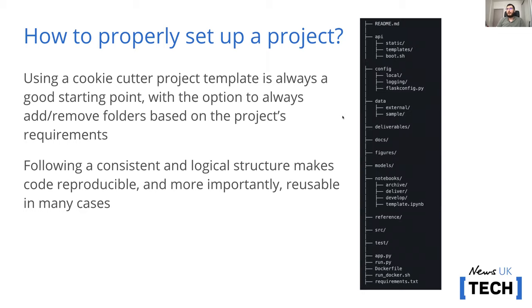On how to set up a project: I always use a cookie-cutter project template. Most data projects follow a structure very similar to this example. The idea is that if you follow a similar structure, it makes your code reproducible and reusable in many cases. If you're building something else, you can reuse code on the fly very easily without too much overhead. Also, if you have this structure, it's very easy for others to figure out what you're doing when they reach your repository for the first time. Good structure is always better than no structure.